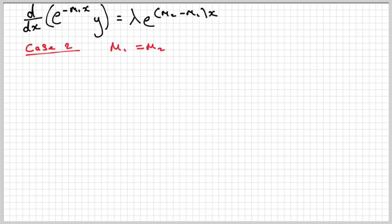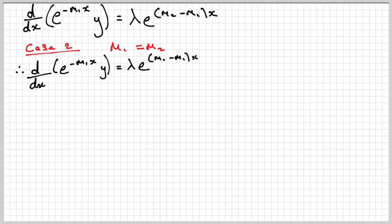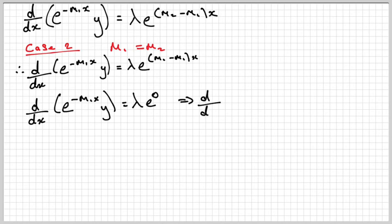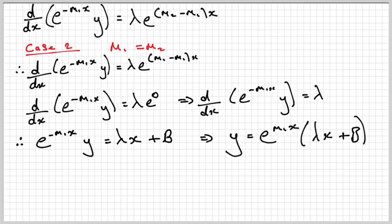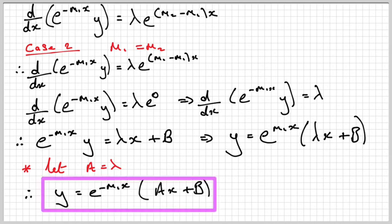Now consider Case 2 where m1 equals m2 — repeated roots. On the right-hand side I now get m1 minus m1, so the differential equation simplifies considerably. Integrating each side with respect to x, with constant B, and multiplying each side by e^(m1x), then letting A equal λ, the general solution for repeated roots as you would see in a textbook is: y equals e^(m1x) times (Ax + B).